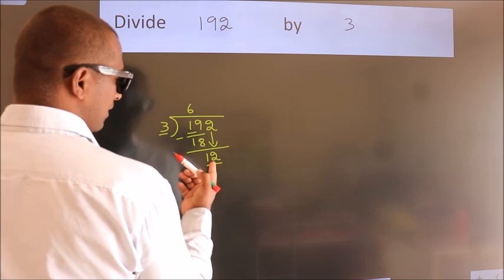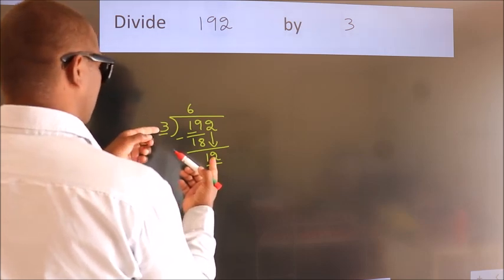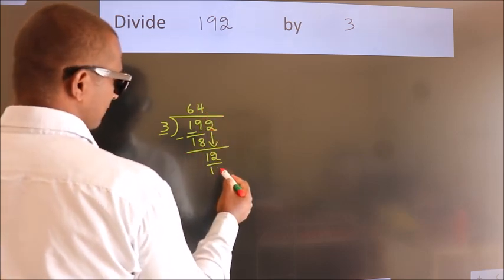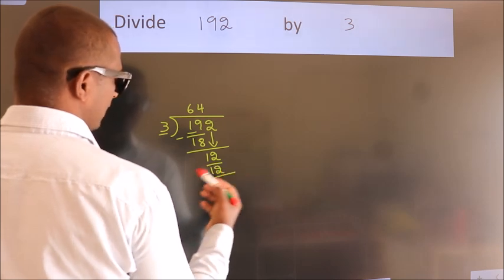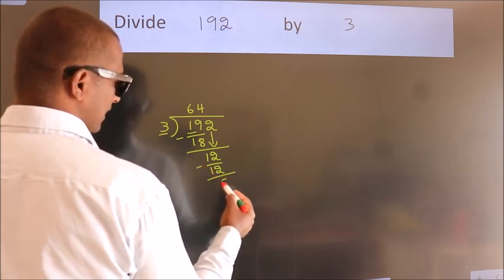When do we get 12? In 3 table. 3 fours, 12. Now we subtract. We get 0.